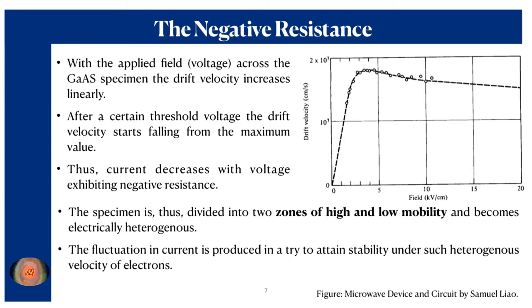In this way, the entire device is divided into two zones: one is the higher mobility zone and another is the lower mobility zone. Not all the electrons get transferred into the higher mobility zone — some are still in the lower mobility zone. The fluctuation that occurs when the applied voltage exceeds some threshold voltage is this situation, where the fluctuation in current through the specimen takes place in a try to attain stability under such an electrically heterogeneous material.